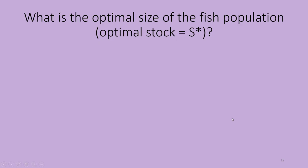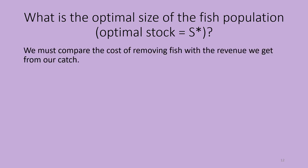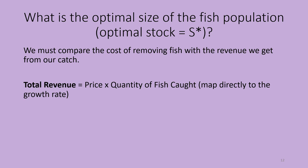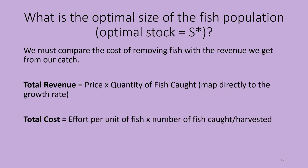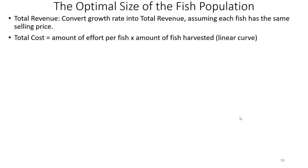What is the optimal size of the fish stock population? We must compare the cost of removing fish with the revenue from our catch. Total revenue equals price times quantity of fish caught. Assuming each fish has the same selling price, we can map that directly to the growth rate — so the growth rate curve equals our total revenue curve. Total cost is the effort per unit of fish caught times the number of fish harvested, assuming equal effort per fish.